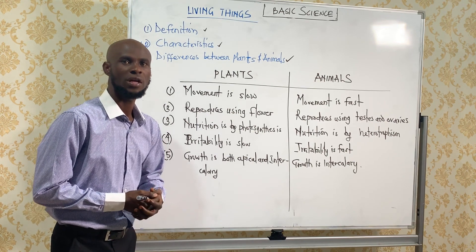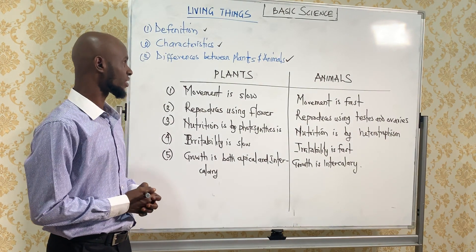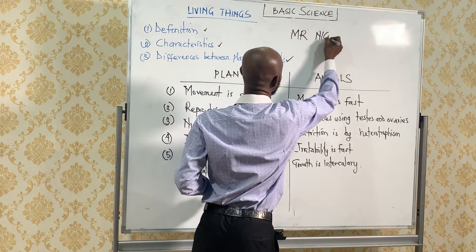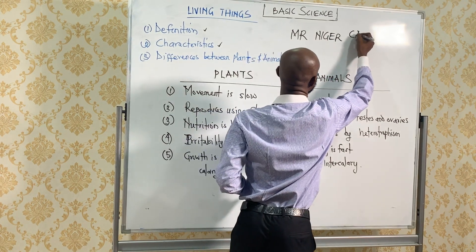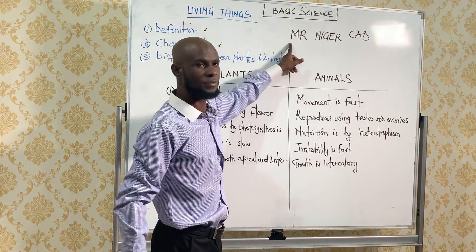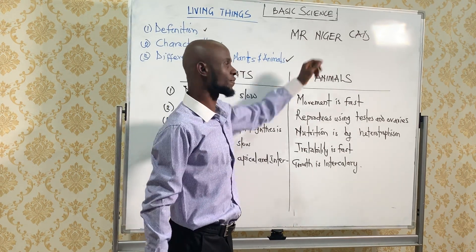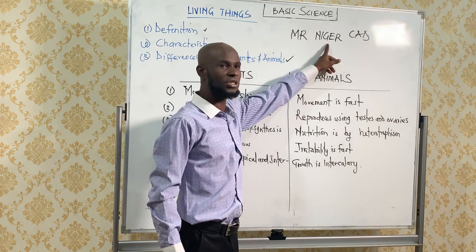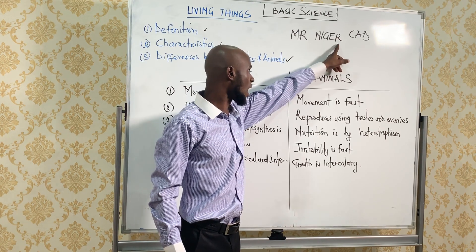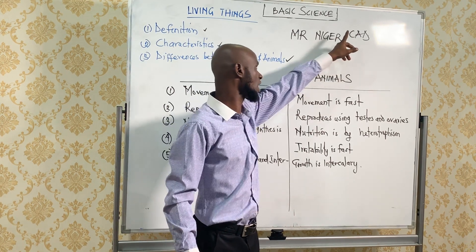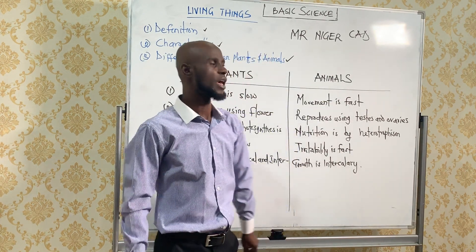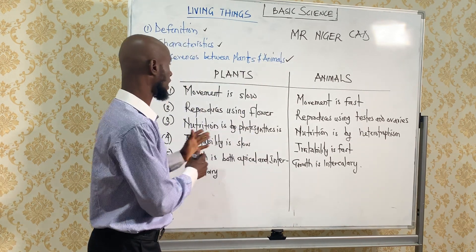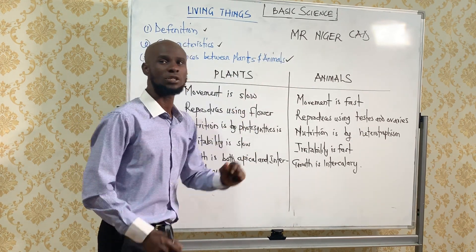The features and characteristics of living things are summarized in MR. NIGER CARD. Let's revise together: M for movement, R for reproduction, N for nutrition, I for irritability and sensitivity, G for growth, E for excretion, R for respiration, C for competition, A for adaptation, and D for death. We're going to pick some of these features and see how plants differ from animals in each of them.